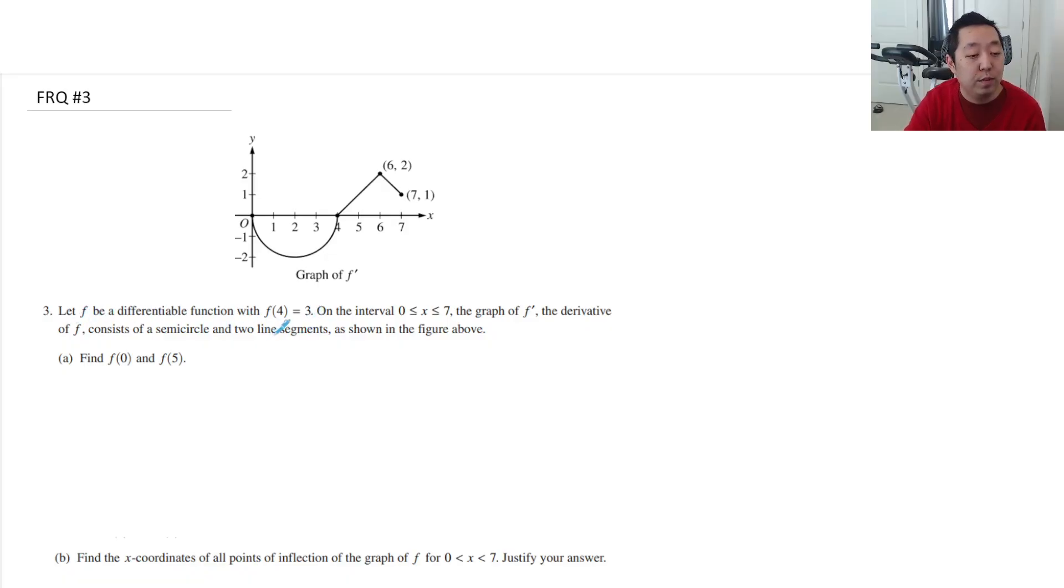Let f be a differentiable function with f of 4 equals 3 on the interval from 0 to 7, the graph of f prime. The derivative f consists of a semicircle and two line segments as shown in the figure. Find f of 0 and f of 5.